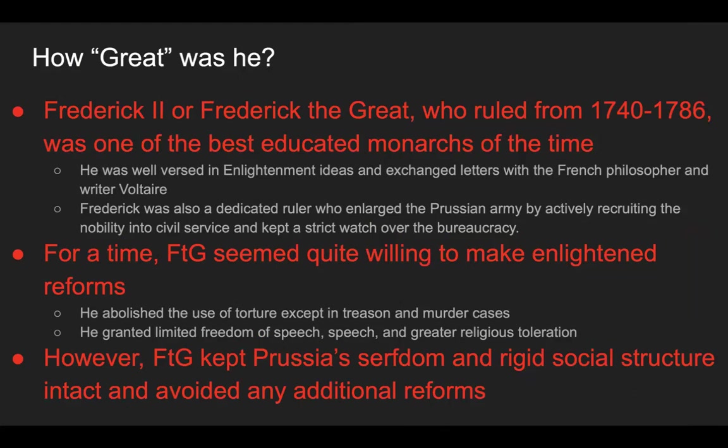Frederick II, or Frederick the Great, ruled from 1740 to 1786 and was one of the best-educated monarchs of the time. He was well versed in Enlightenment ideas and exchanged letters with the French philosopher and writer Voltaire. Frederick was also a dedicated ruler who enlarged the Prussian army, actively recruited the nobility into civil service, and kept a strict watch over the bureaucracy.